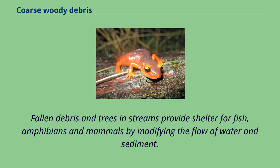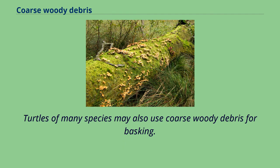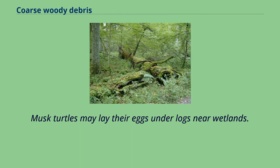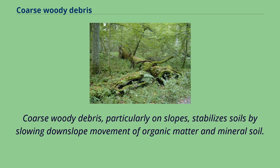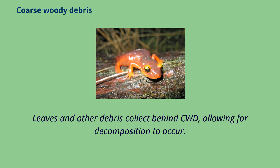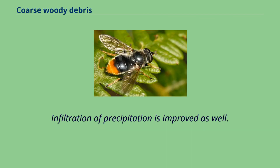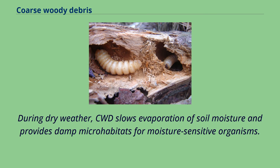Fallen debris and trees in streams provide shelter for fish, amphibians, and mammals by modifying the flow of water and sediment. Turtles of many species may use coarse woody debris for basking, and musk turtles may lay their eggs under logs near wetlands. Coarse woody debris, particularly on slopes, stabilizes soils by slowing downslope movement of organic matter and mineral soil. Leaves and other debris collect behind CWD, allowing for decomposition to occur, and infiltration of precipitation is improved as well. During dry weather, CWD slows evaporation of soil moisture and provides damp microhabitats for moisture-sensitive organisms.